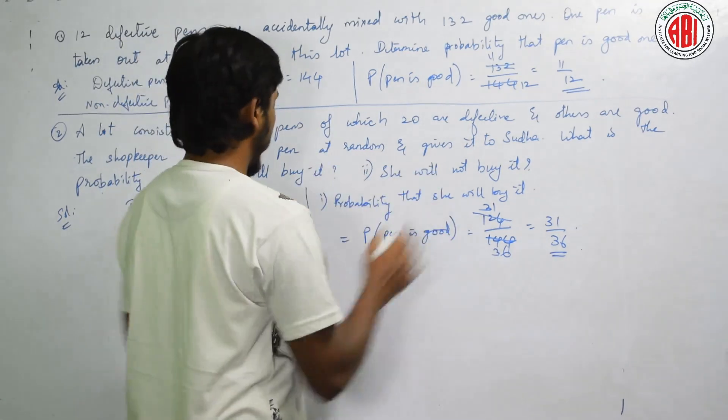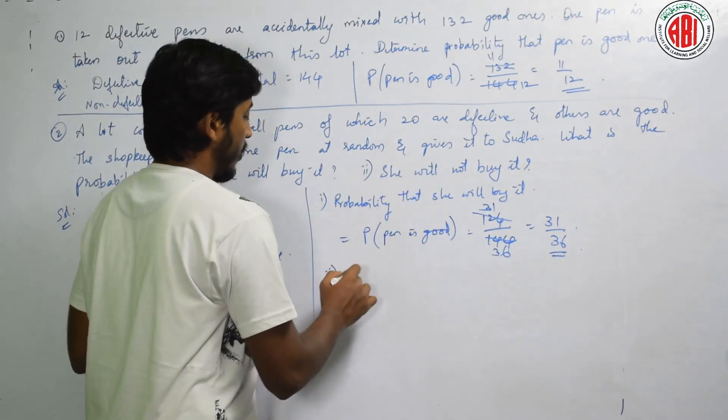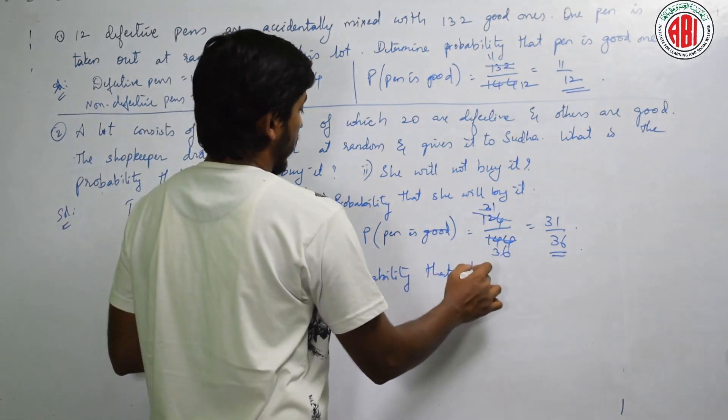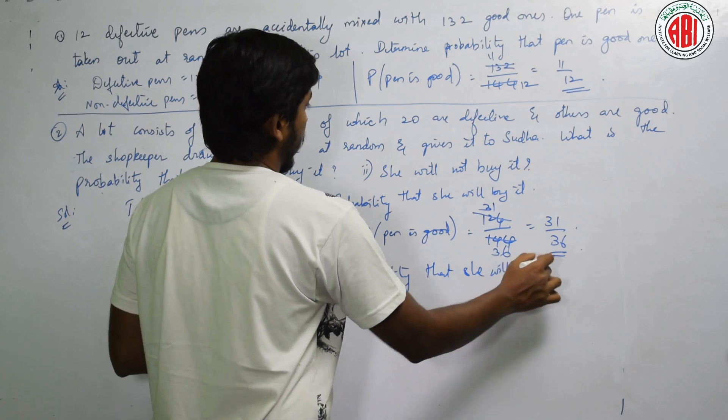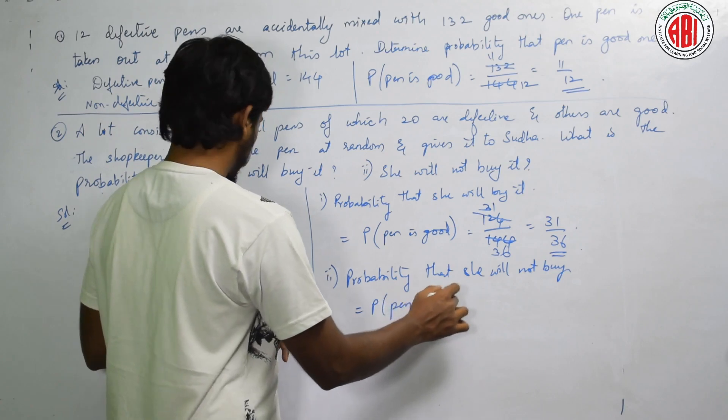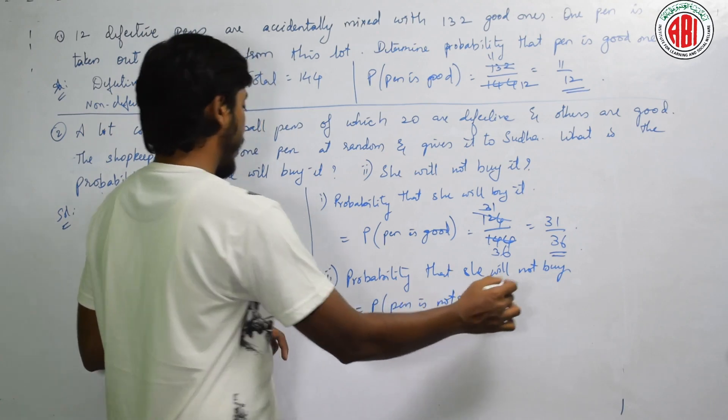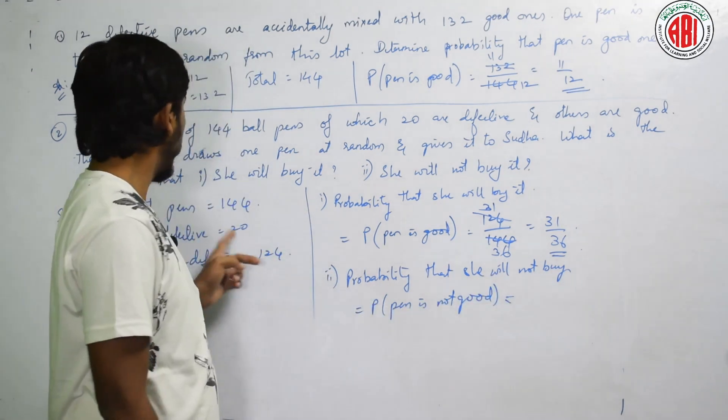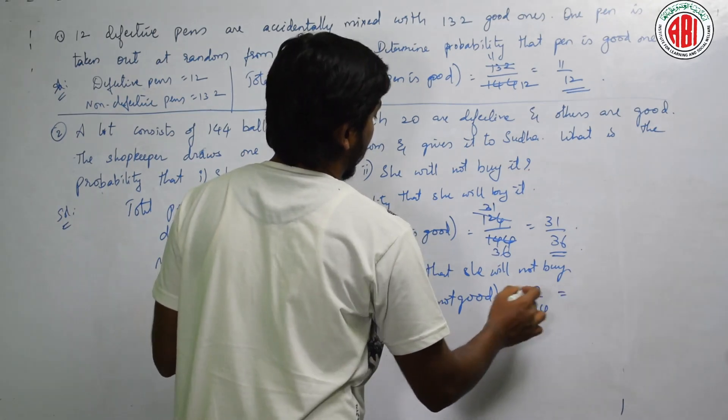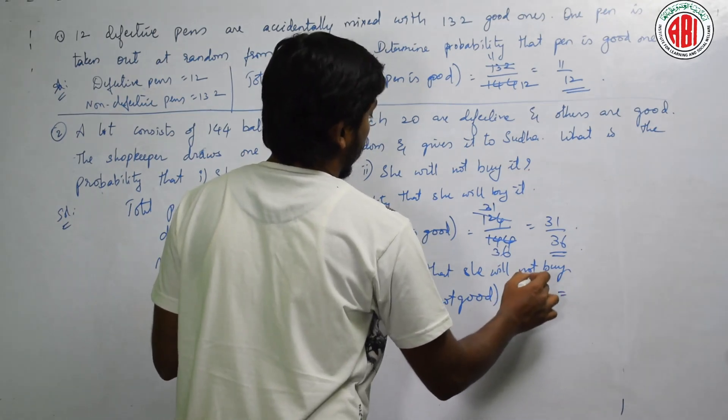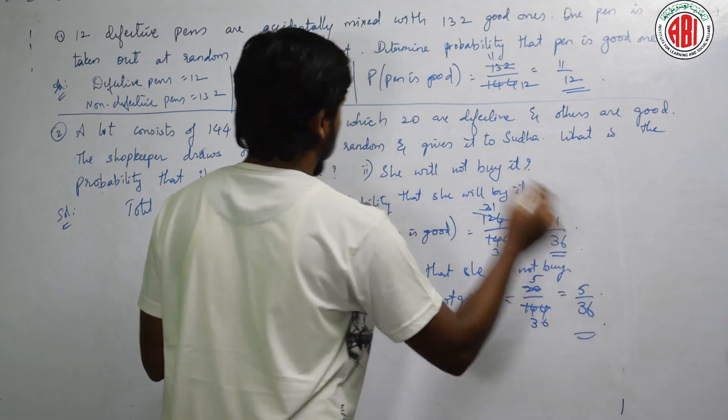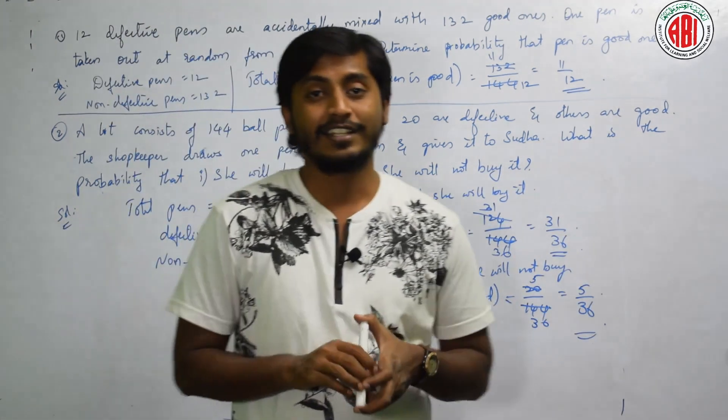Next question, she will not buy it. Probability that she will not buy is equal to probability that pen is not good. Defective kitne? 20 by 144. That is, how much will it be? 4, 5 and 4, 36. Answer is 5 by 36. Is it right? Shall we move on to the next problem?